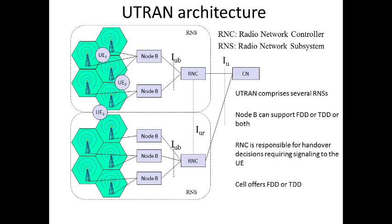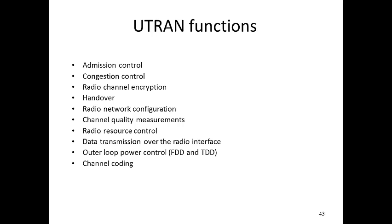UTRAN comprises several RNS. Every Node B can support FDD and TDD or both, but the RNC is responsible for handover decisions. The functions of UTRAN include admission control, congestion control, radio channel encryption, handovers, radio network configuration, channel quality measurements, radio resource control, data transmission over the radio interface, outer loop power control for FDD and TDD, and channel coding.